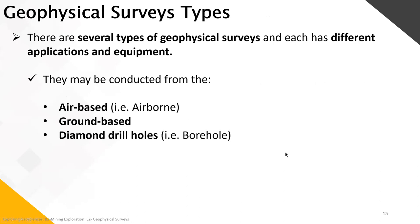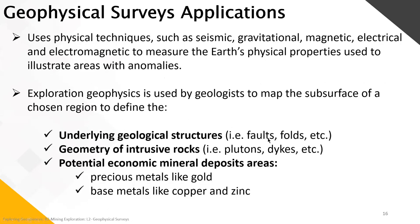Geophysical survey types vary — they each have different applications and equipment and can reach various depths. They are basically separated into three categories: airborne, ground-based, and diamond drill holes or boreholes. The geophysical survey applications use physical techniques such as seismic, gravitational, magnetic, electrical, and electromagnetic to measure the Earth's physical properties and illustrate areas with anomalies.